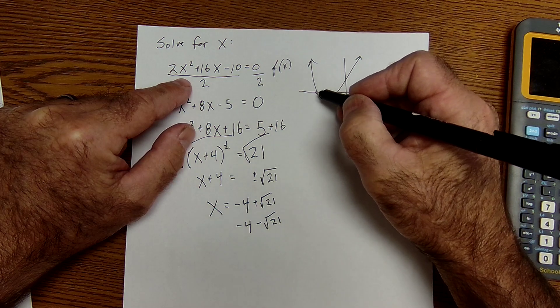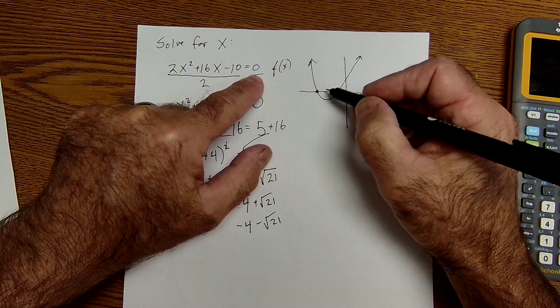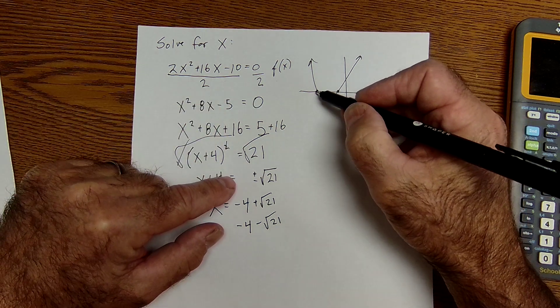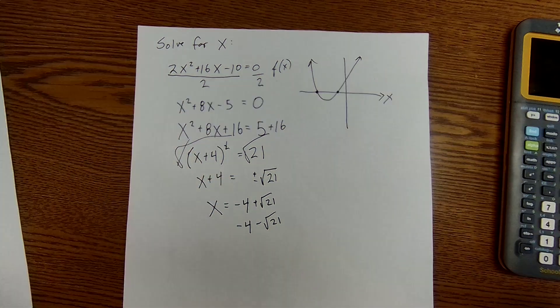That quadratic would be a graph like that. That point of intersection would be where Y equals 0. You would have two solutions because there are two points of intersection on the X axis.